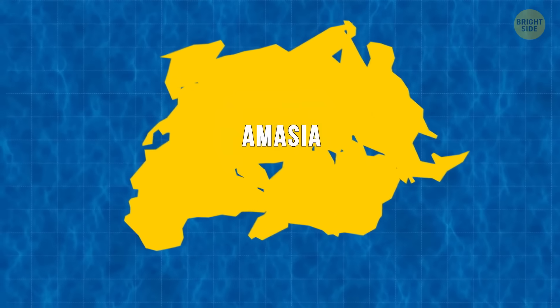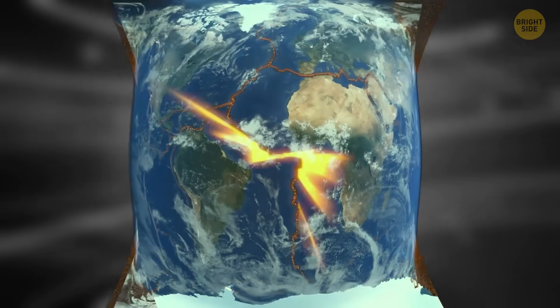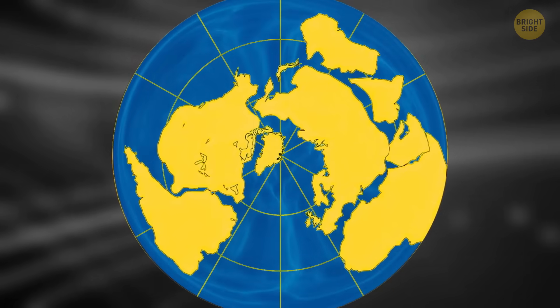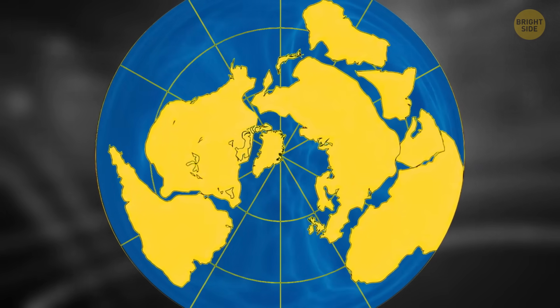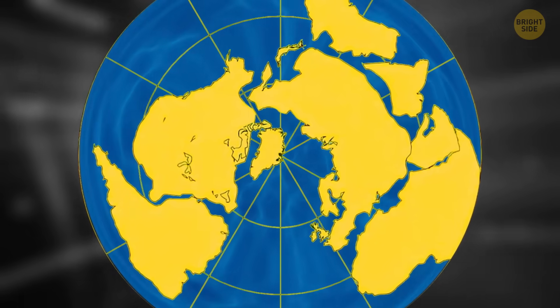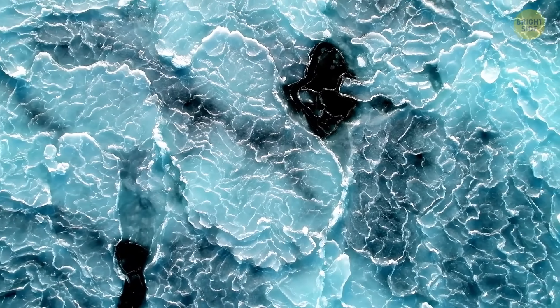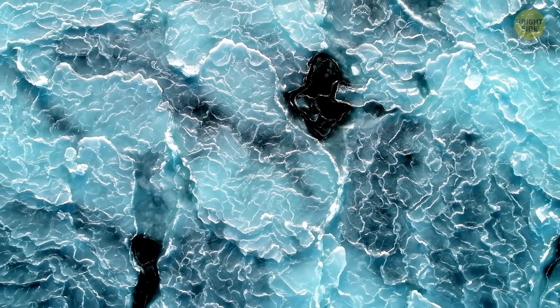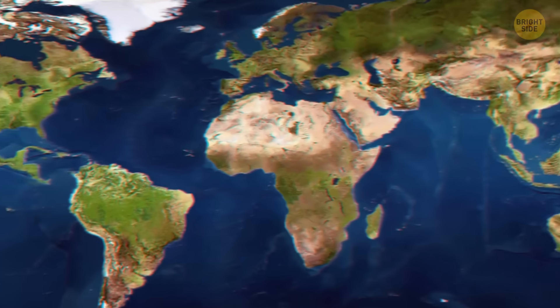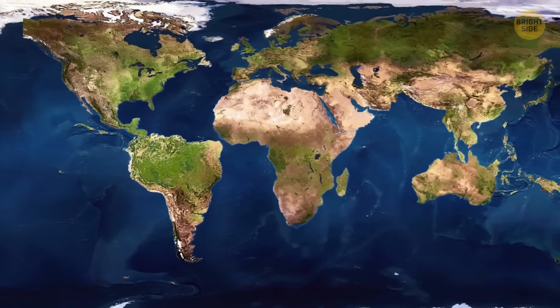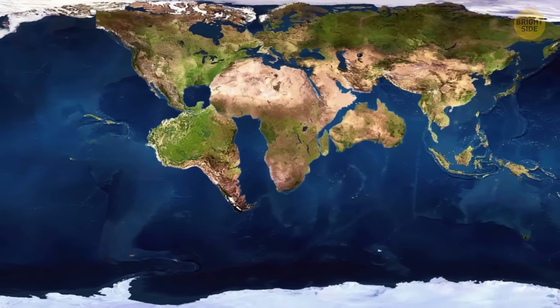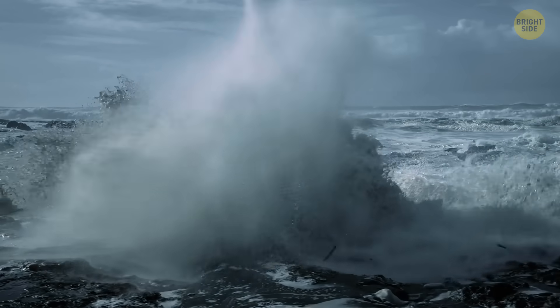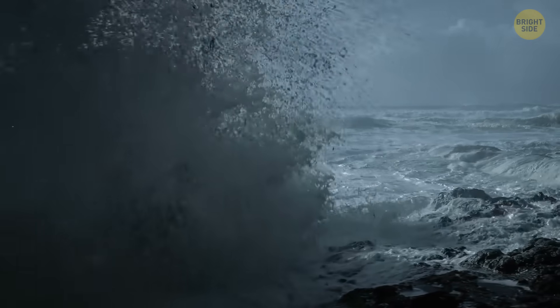And finally, Amasia. It might form if some of the tectonic plates go north. They can take continents like Africa and Australia along for the ride. They'll be hanging out around the North Pole. All the continents, except Antarctica, might come together. And even though they might gather around the North Pole, they won't close off the oceans. The Atlantic and Pacific Oceans would still be open for business.